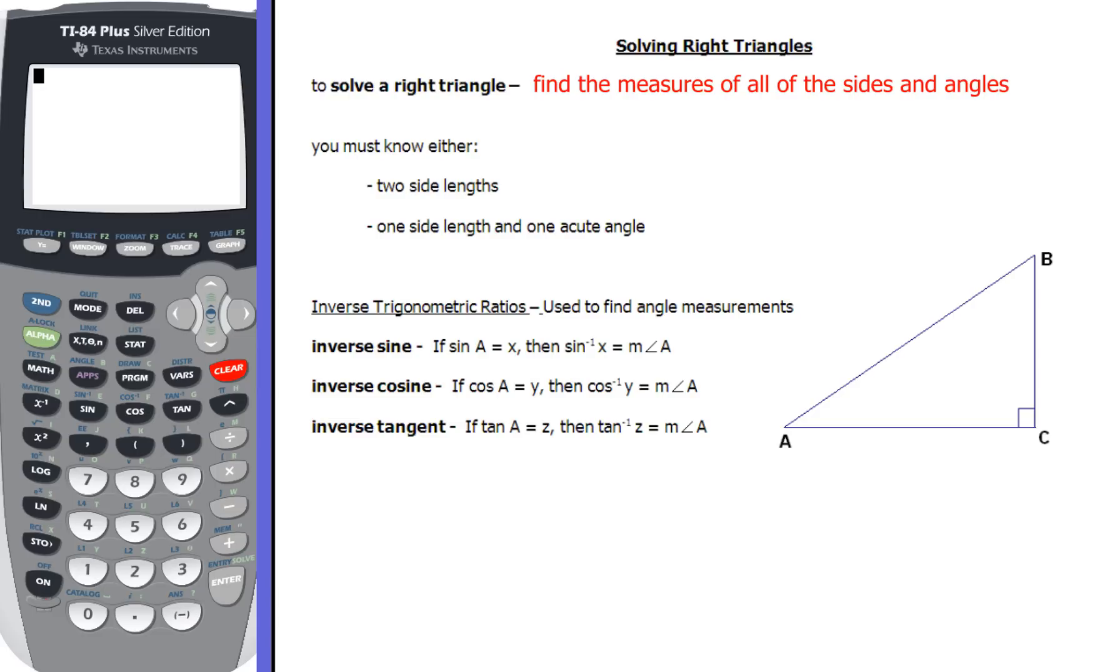Now, to solve a right triangle, we're going to either know one of two things. We're going to know two side lengths, or we're going to know one side length and one acute angle. So that means we're going to have to find everything else either using Pythagorean Theorem, trigonometry, or this new piece of trig for you guys called the inverse trig ratios.